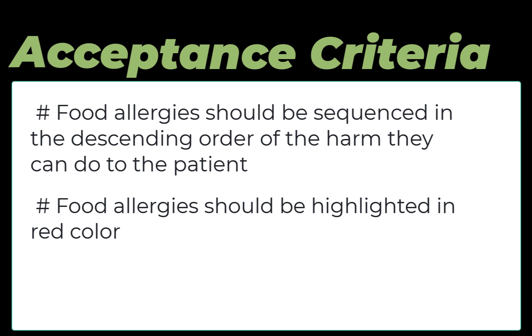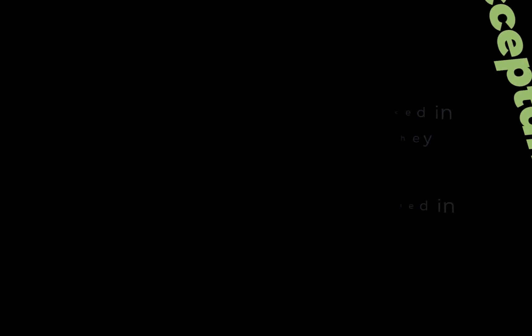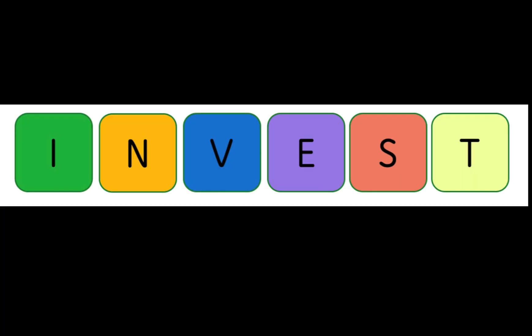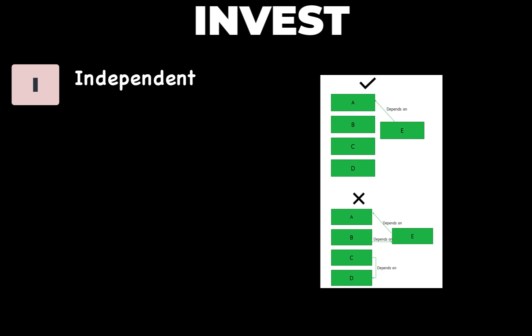Let's discuss another effective method which can be used to write good user stories. This method is represented by INVEST, where I stands for independent. Try to write stories which are independent of each other — one story should not have a dependency on other stories, and whenever required, can be pulled from the backlog and worked upon. There are times when it is not possible to have a story completely independent, which is okay, but the idea here is to minimize the dependencies.